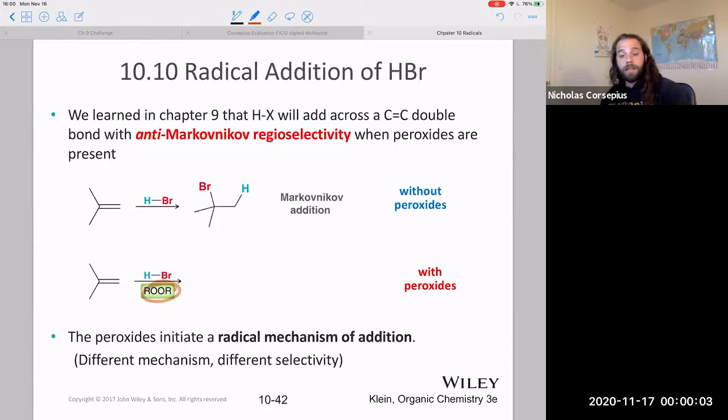...you would actually get the anti-Markovnikov addition, right? So now my bromine is on the less highly substituted carbon. So this right here, this second reaction, this is the radical addition of HBr.